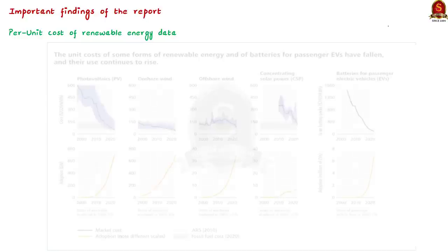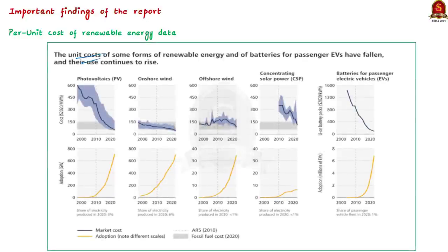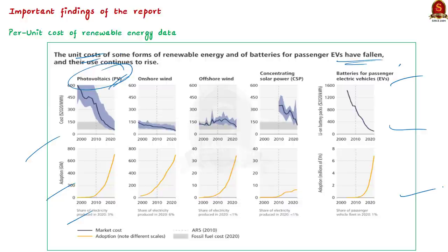Now look at these graphs. The per unit cost of several low emission technologies have fallen continuously since 2010. The maximum fall in per unit cost is witnessed in photovoltaics and batteries for passenger electric vehicles. Due to the fall in price, the adoption of renewable energy has increased. Except concentrating solar power (CSP), all other renewable resources have shown a rapid jump in adoption post-2010. This is due to the significant push for renewable energy by governments all around the world.